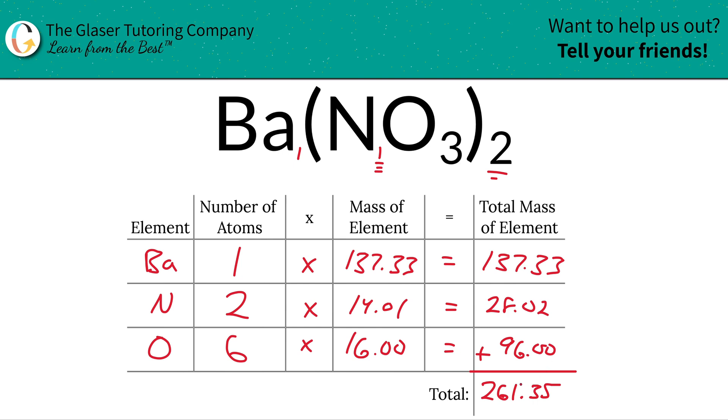Now this is basically the first step to finding percent composition. We first have to find the total mass of the entire compound. And now finding the mass percent or the percent composition of each of these elements now in barium nitrate is fairly simple. I'm going to add one more column to this table.